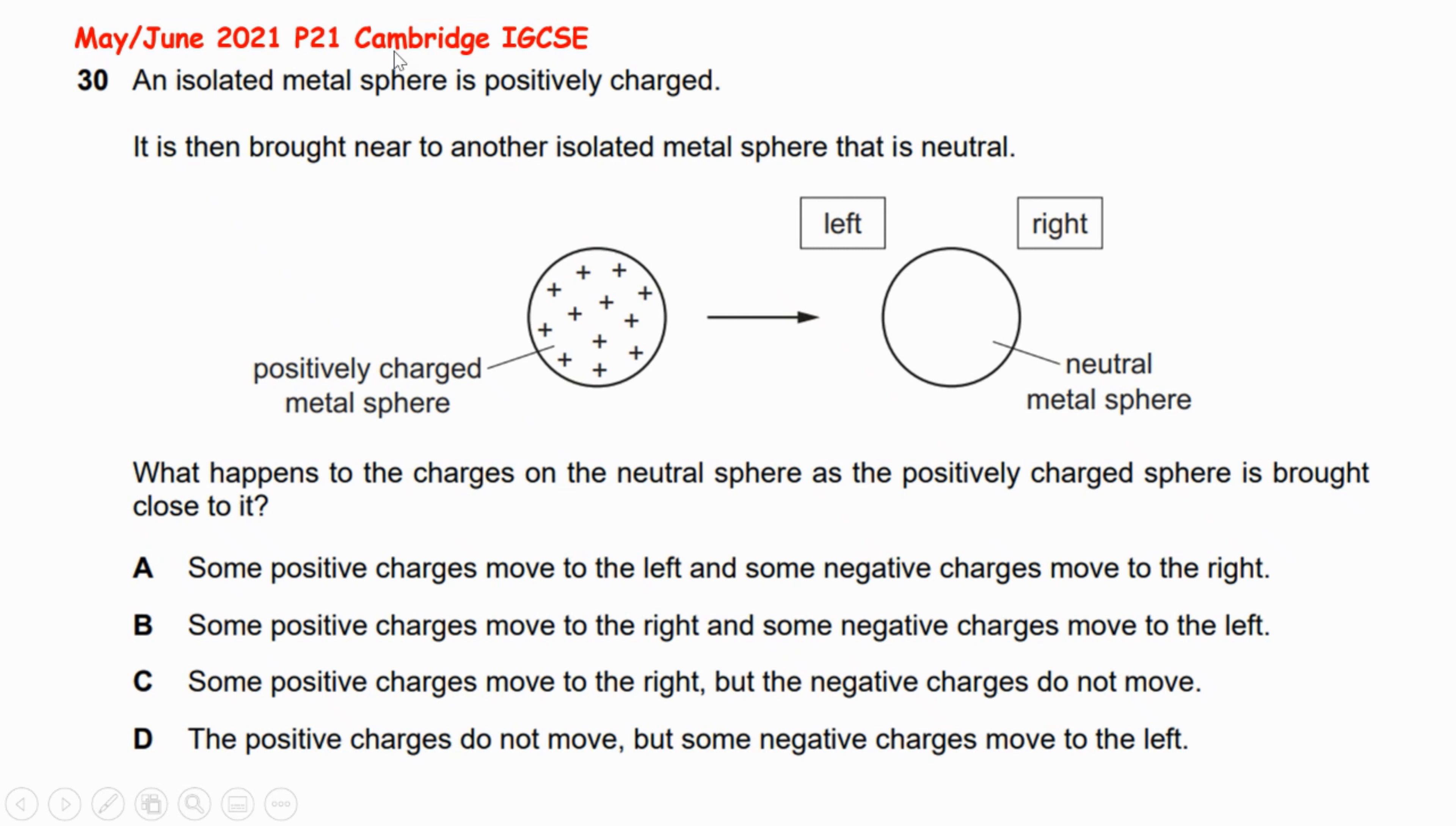2021 Paper 21 Cambridge IGCSE, Question 30. An isolated metal sphere is positively charged. It is then brought near to another isolated metal sphere that is neutral, meaning the number of positive charges equals the number of electrons, or there is no net charge. What happens to the charges on the neutral sphere as